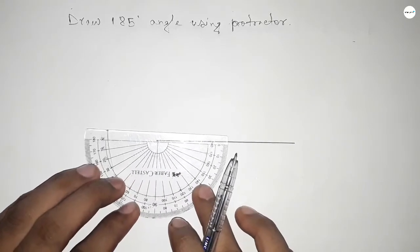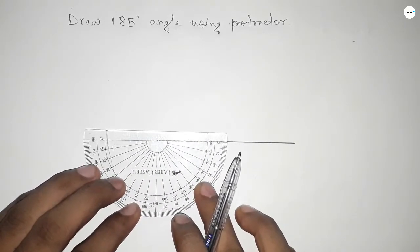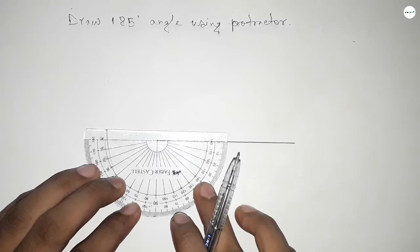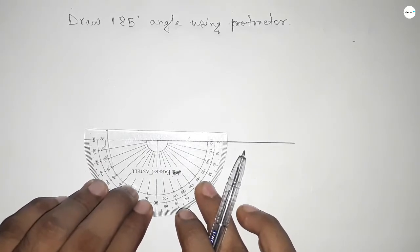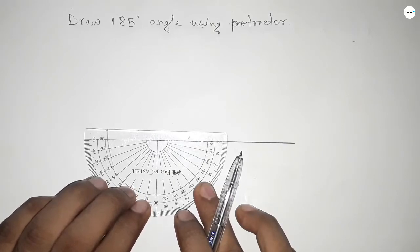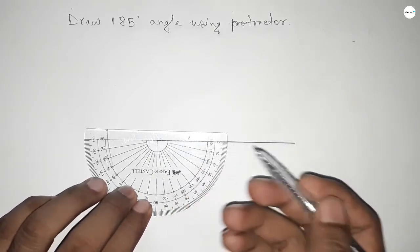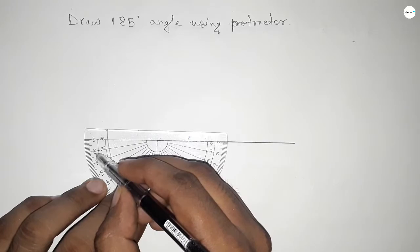So we have to add 5 degree extra with 180. So putting the protractor by this way and counting 5 degrees, between 0 to 10 we can get 5 degree.